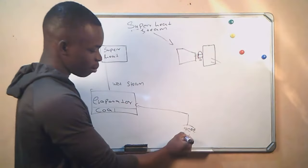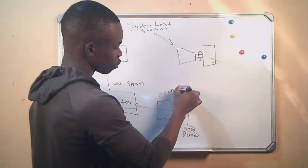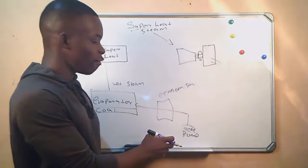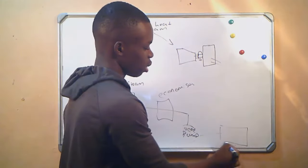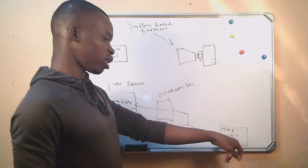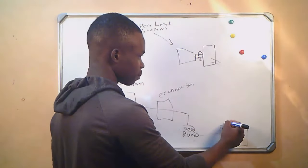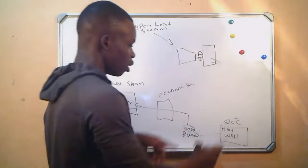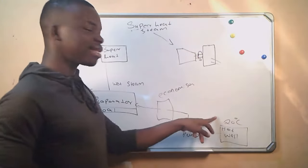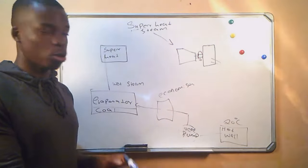Between the evaporator and the feed pump, we have an economizer. An economizer is used to raise the temperature of the water from what it is as it is coming from storage — we call the storage the hot well. The feed pump pumps the water from the dam. Let's say the water is at a temperature of 20 degrees Celsius. The water will be pumped from the hot well and then passed to the economizer, which will raise its temperature so that it becomes easier to evaporate the water when we reach the evaporator.